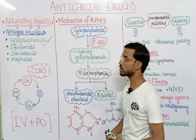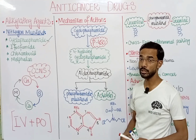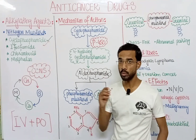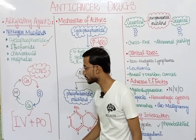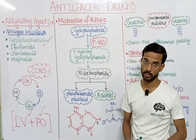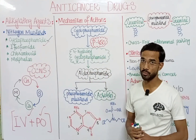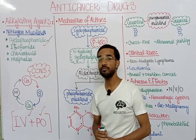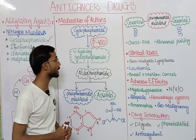Cyclophosphamide is taken into the body through two routes: intravenous (IV) and oral route. So these are basically the two routes of cyclophosphamide. Now let's discuss the mechanism, which is very important.